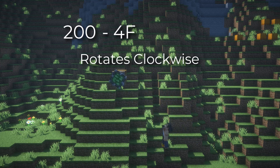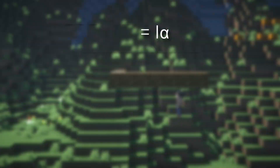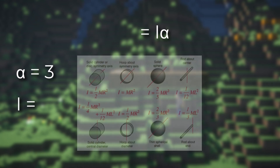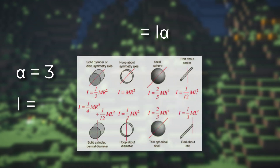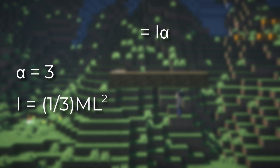So: 200 minus 4f equals iota alpha. Now the iota alpha: alpha equals 3, while the moment of inertia follows the formula on the sheet. We can see that this is a stick pivoting at the end, so the equation will be 1/3 ml squared.